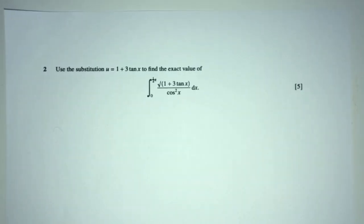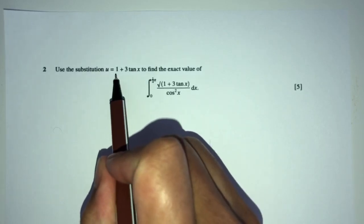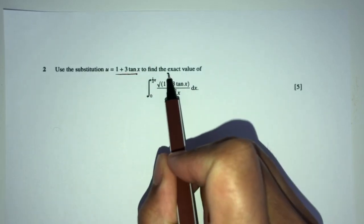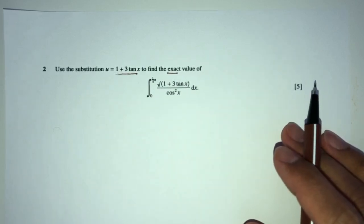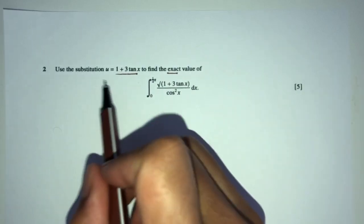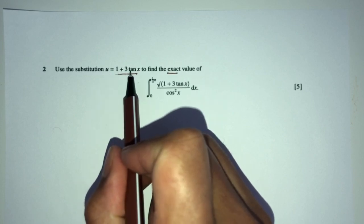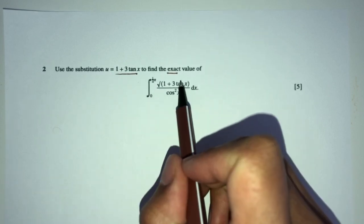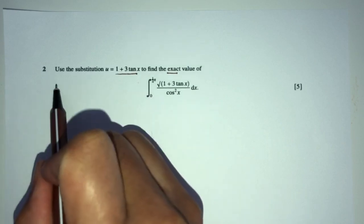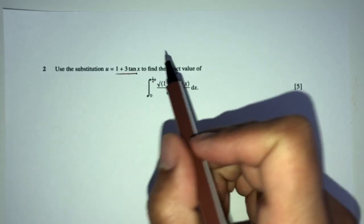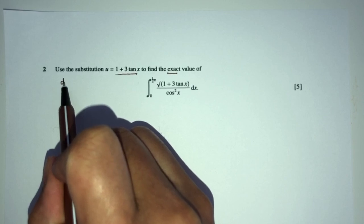Now let's move on to question number 2. So using the substitution u equal to 1 plus 3 tan x, find the exact value of this integral. So 1 by 1, let's see what can we do. So here we have u as this. Obviously here you will have the value here. But first thing first, we have to find du/dx because here we have dx.